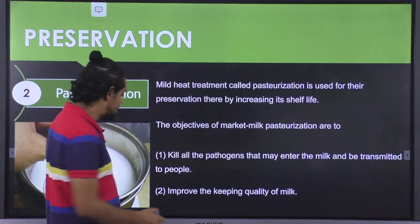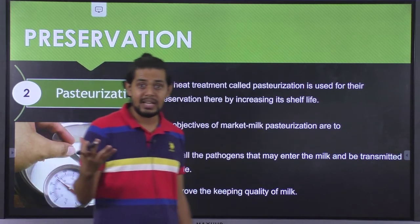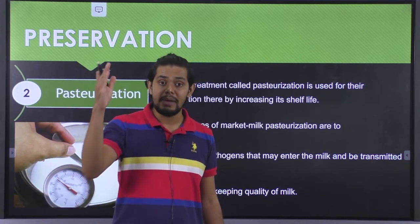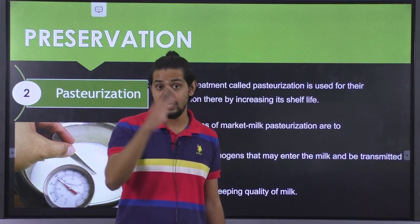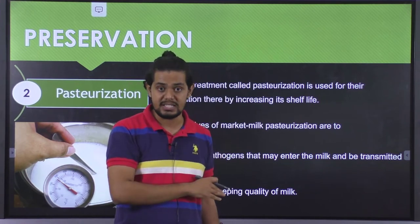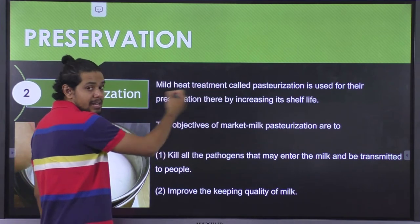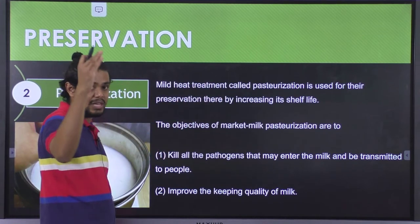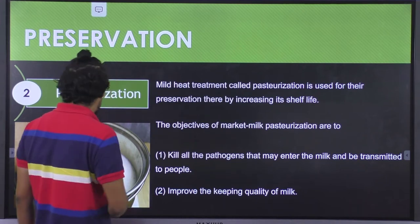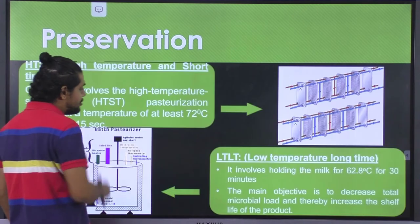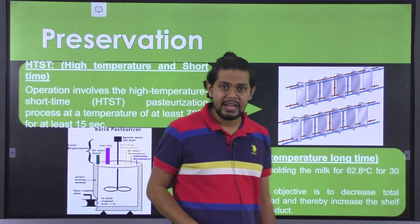The second important objective is to improve the keeping quality of milk by decreasing the number of microorganisms. We are subjecting the milk to mild heat treatment so that the amount of microorganisms can be significantly reduced. There are two different types of pasteurization technique: the first is HTST, meaning high temperature short time.